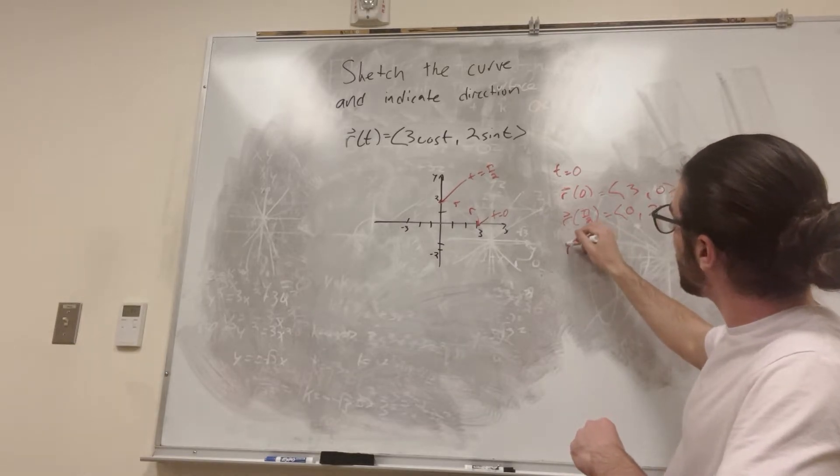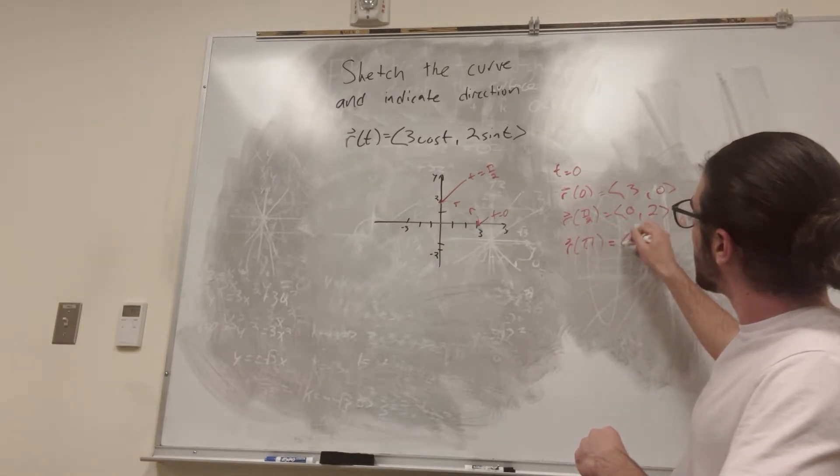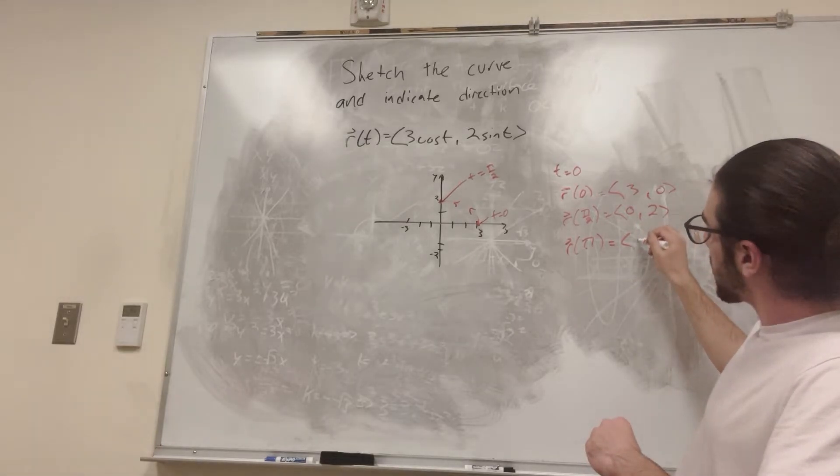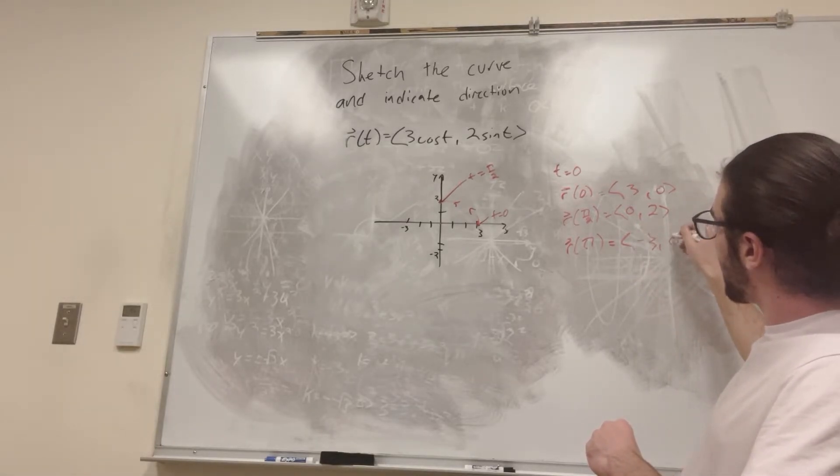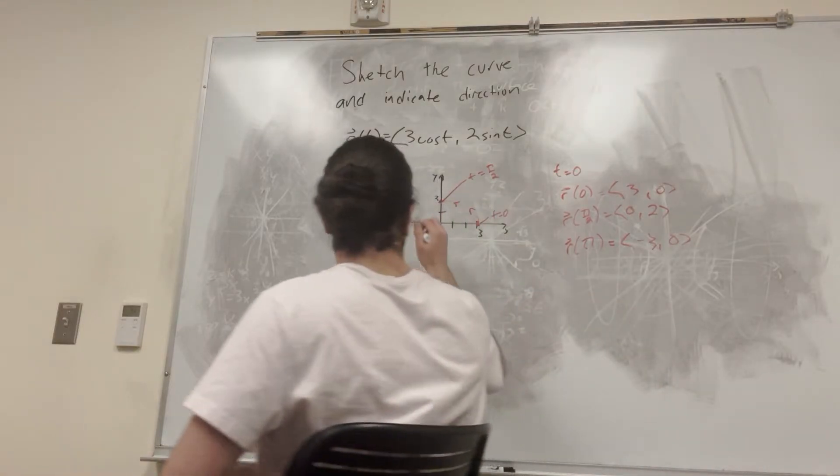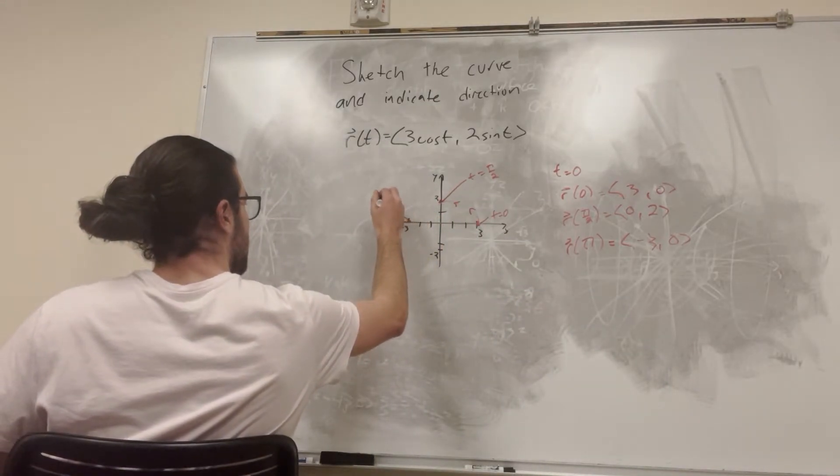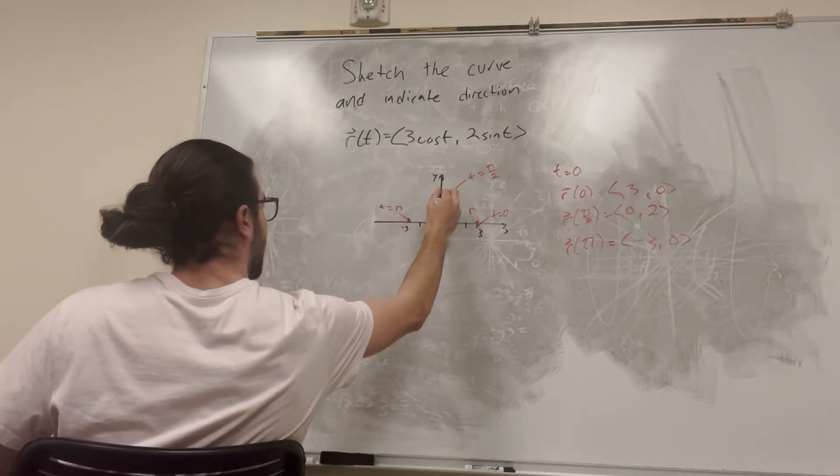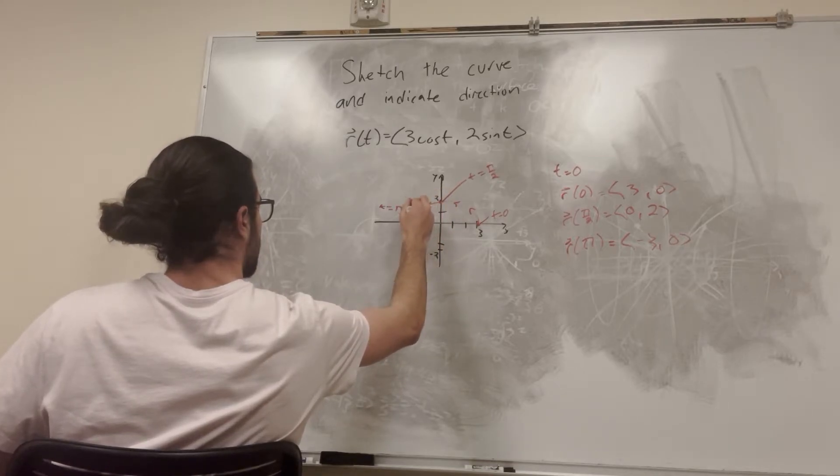So let's go ahead and do R of t is equal to pi. So cosine of pi is negative 1, so it's going to be negative 3. And then sine of pi is 0, obviously. So we're going to go to negative 3 over here. This is where t is equal to pi. So obviously it's going to get connected again with arrows to indicate direction.